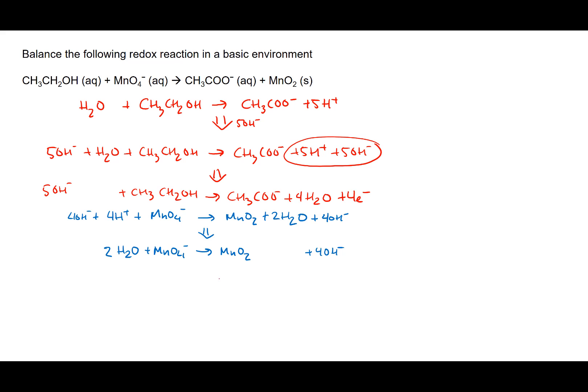The last thing to do is balance the charges. Right now there is only 1 negative charge on the reactant side but 4 negative charges on the product side, so we add 3 electrons to the reactant side. This makes sense: manganese in MnO4- has an oxidation state of +7, while in MnO2 it's +4, so we need 3 electrons. That's the balanced half reaction for permanganate.